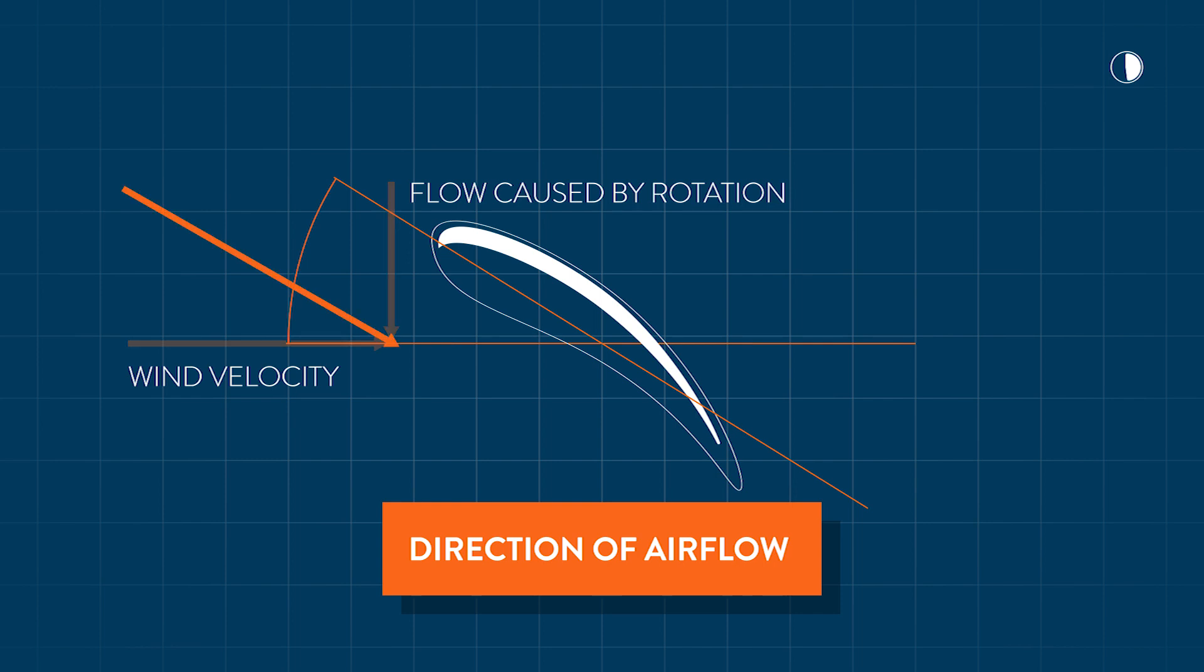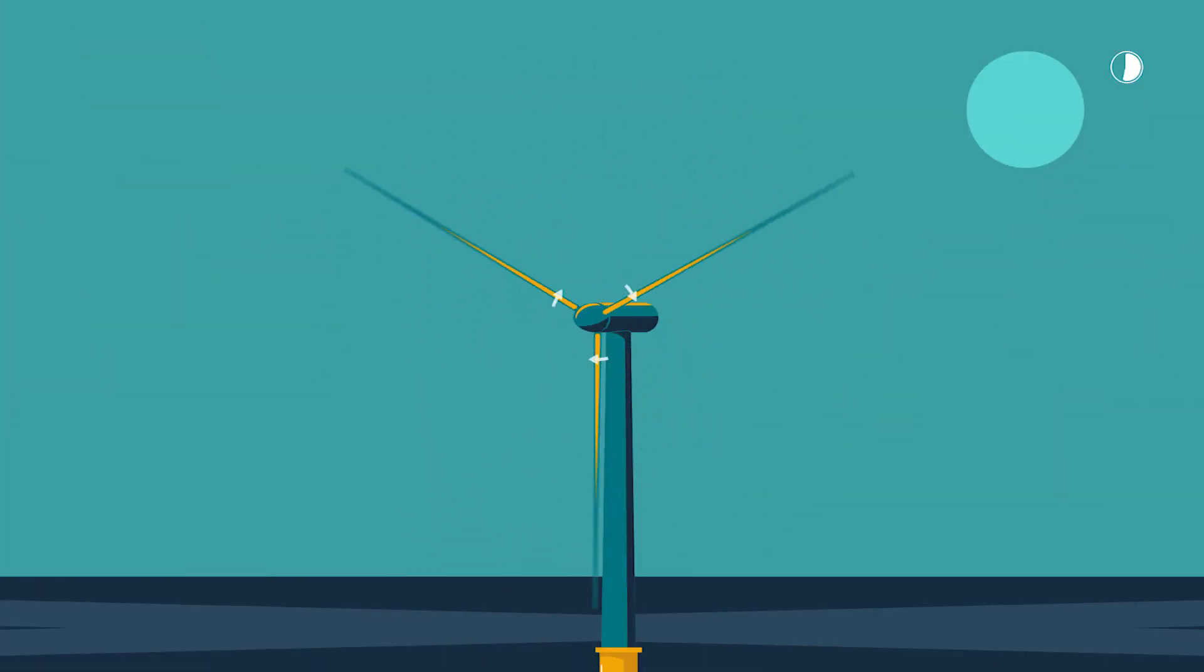And this is where the wind turbines differ from airplanes. Near the blade root, the radial velocity of the blade is low.